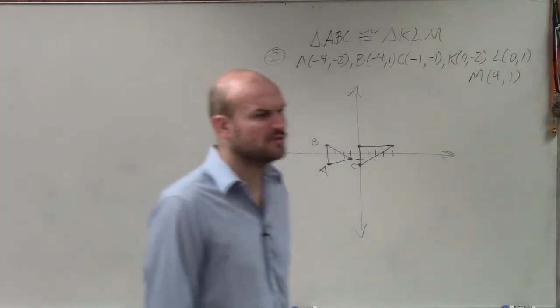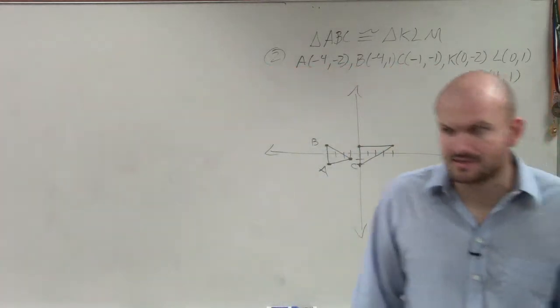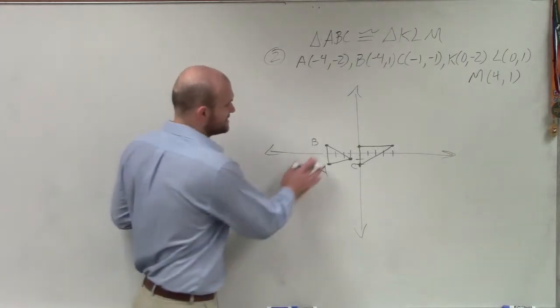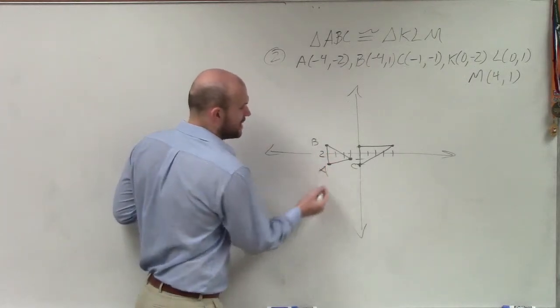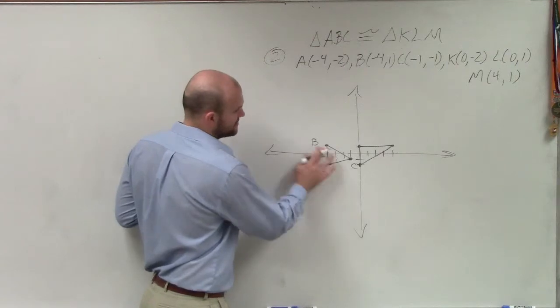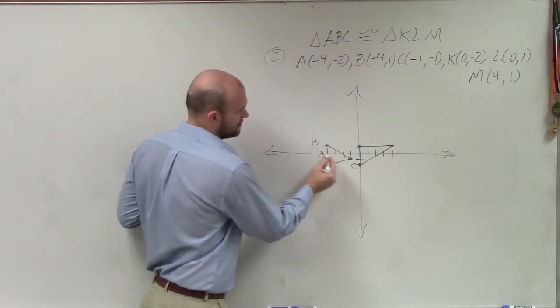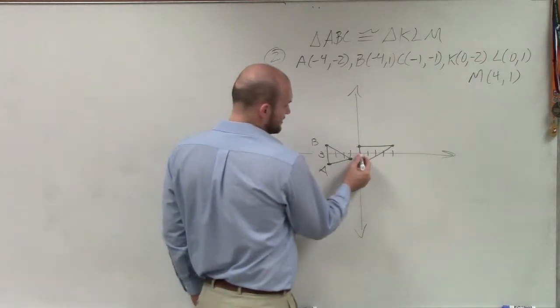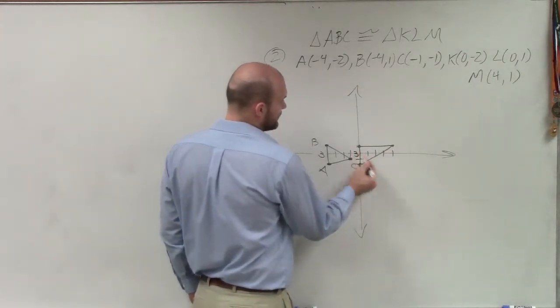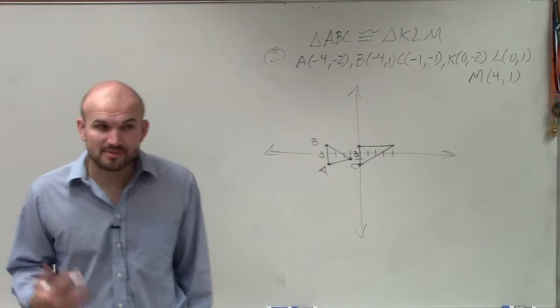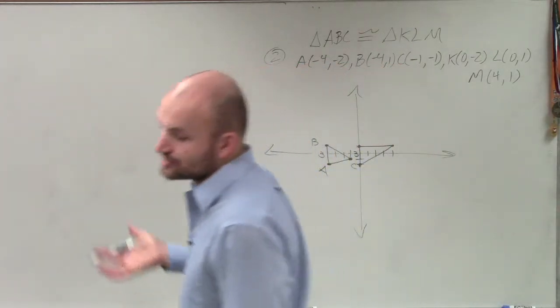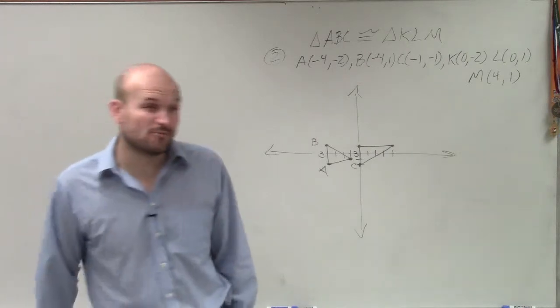And what they're asking us to do is to prove that these triangles are congruent or not. Well, ladies and gentlemen, we know that this side length is 3. We know that this side length is 1, 2, 3 as well. But remember, for them to be congruent, all the sides of the triangles have to be equal, and all the angle measures have to be equal.